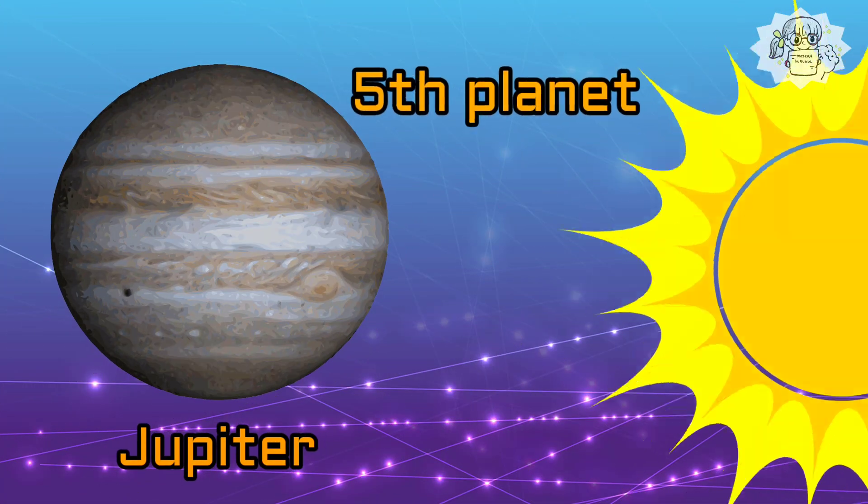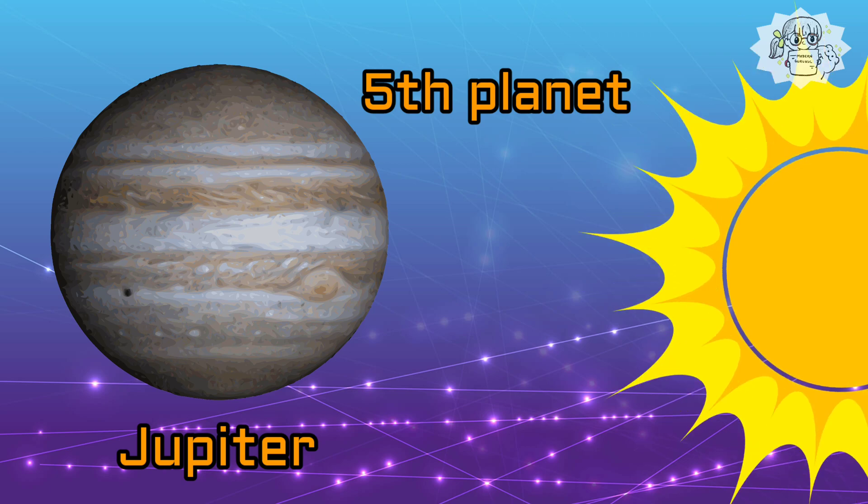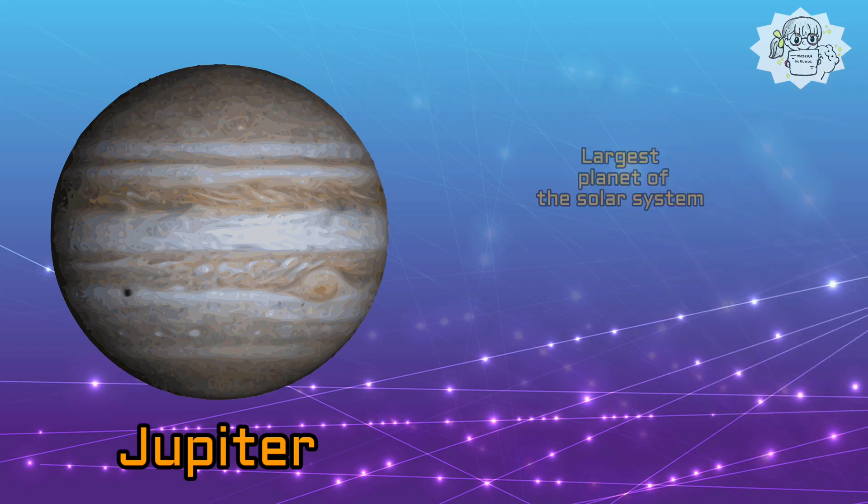Jupiter is the fifth planet from the Sun and the innermost of the four giant planets. It is the largest and most massive planet, with a diameter about 11 times that of Earth.